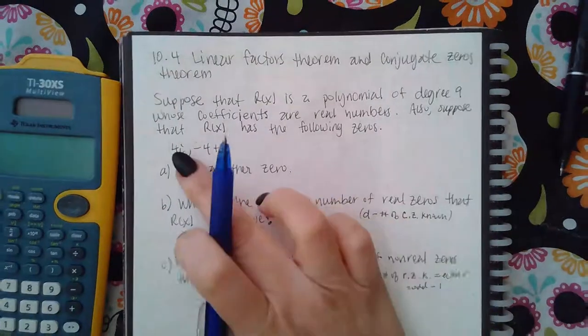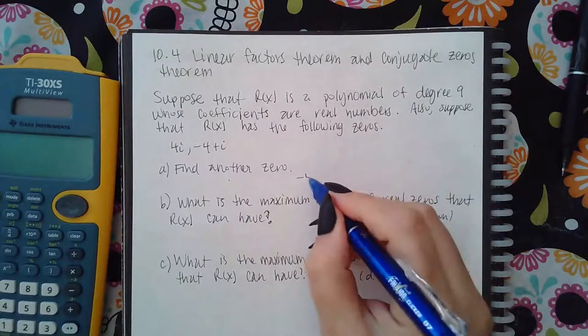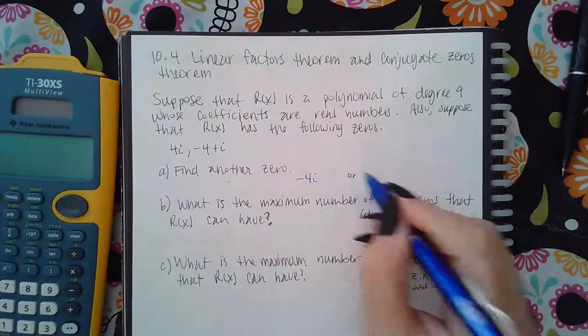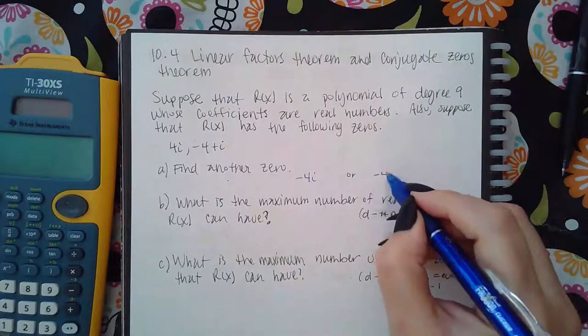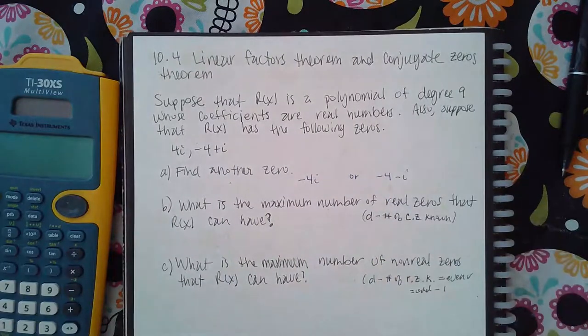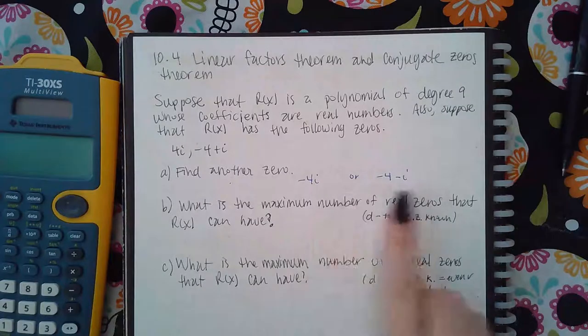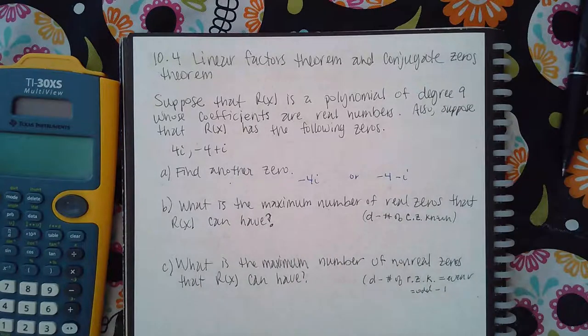The answer is the conjugate of 4i, which is -4i, or you could answer the conjugate of -4+i, which is -4-i. So there are two possibilities for an answer in part a.